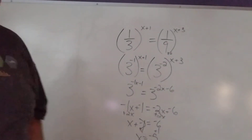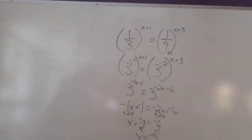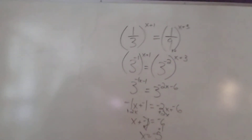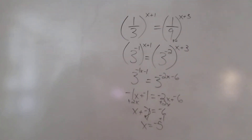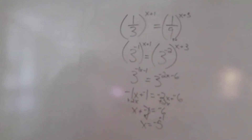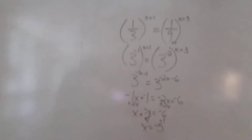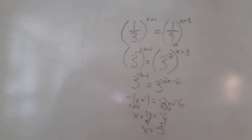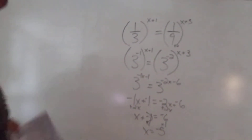Adding one to both sides gives x equals negative five. So you should have gotten negative five for number three.